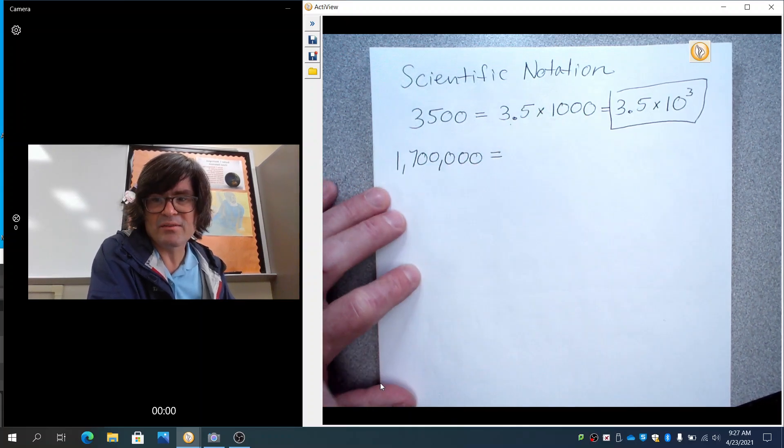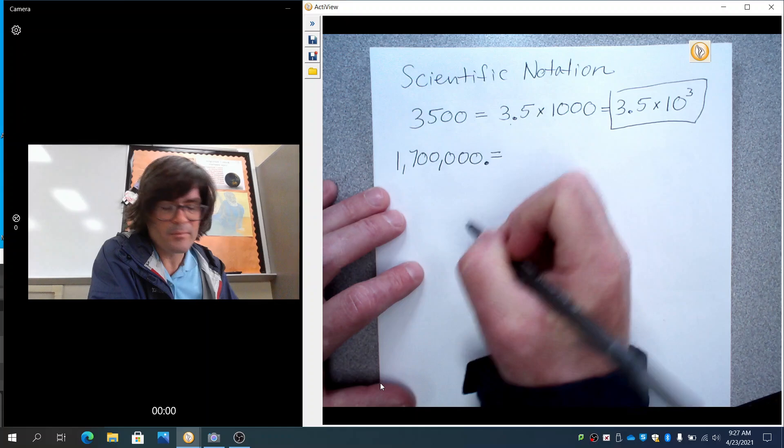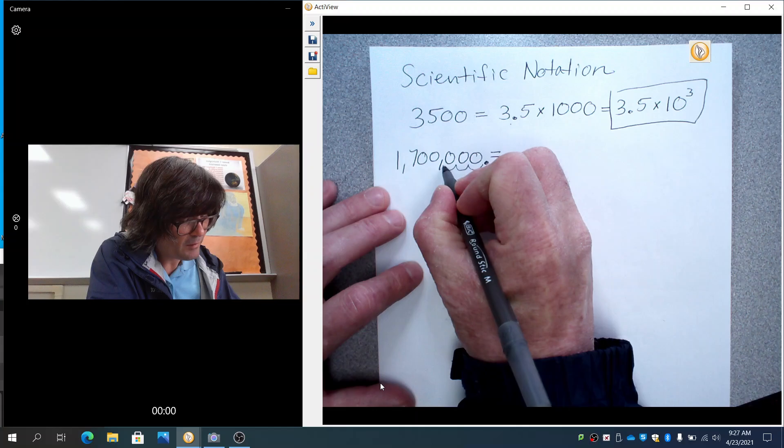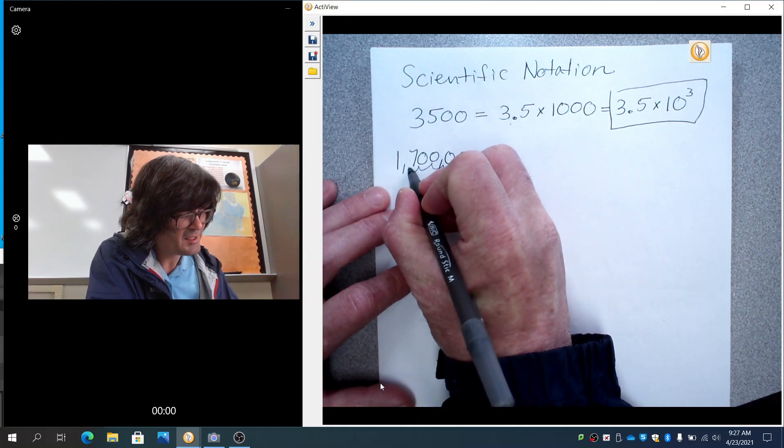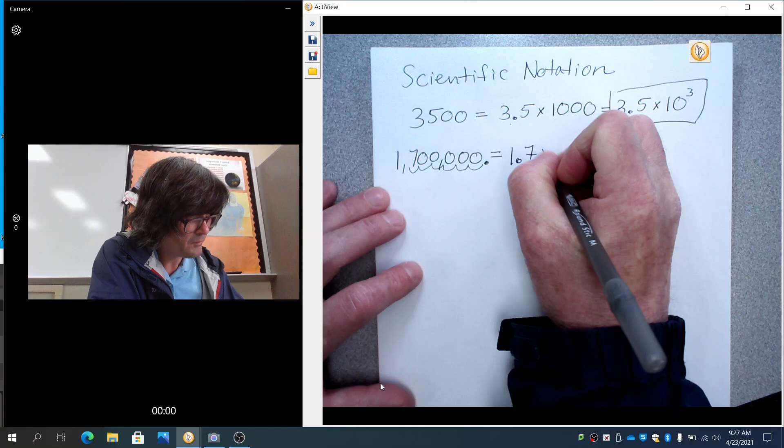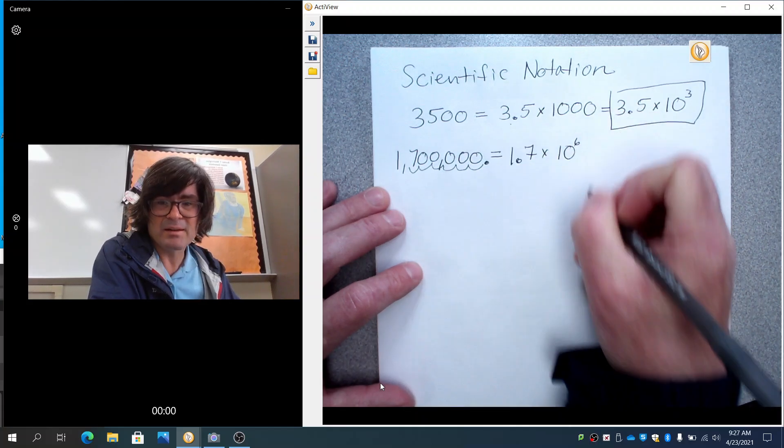1,700,000. That's 1.7 million. So a decimal would go right here, and you would move it over 1, 2, 3, 4, 5, and then finally 6 spots. And this would now be 1.7 times 10 to the sixth.